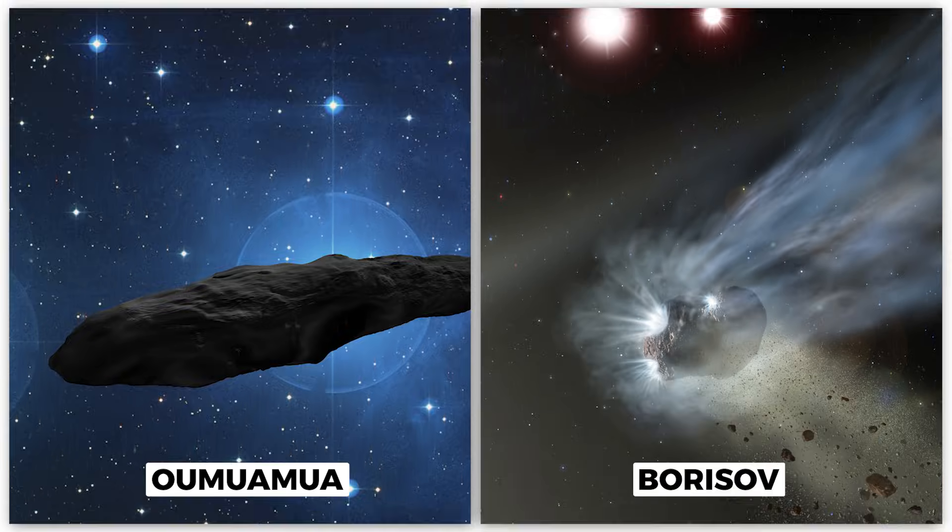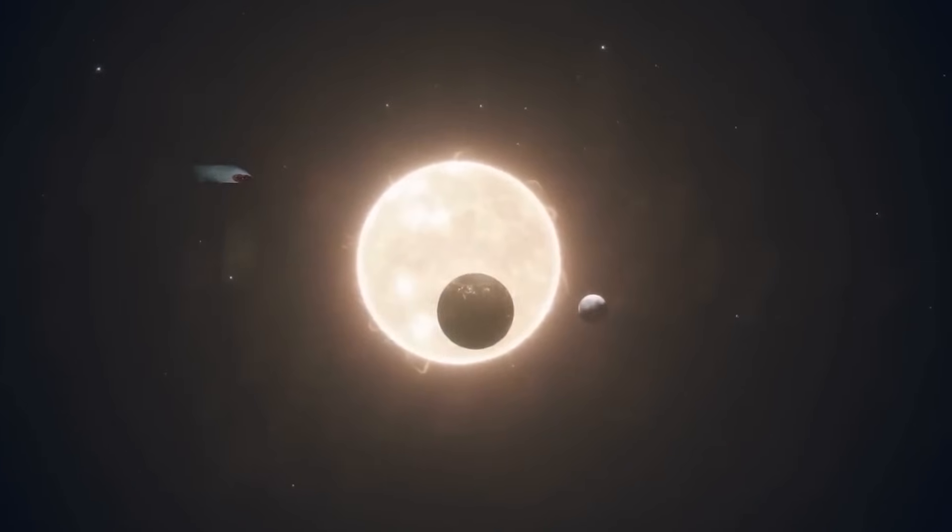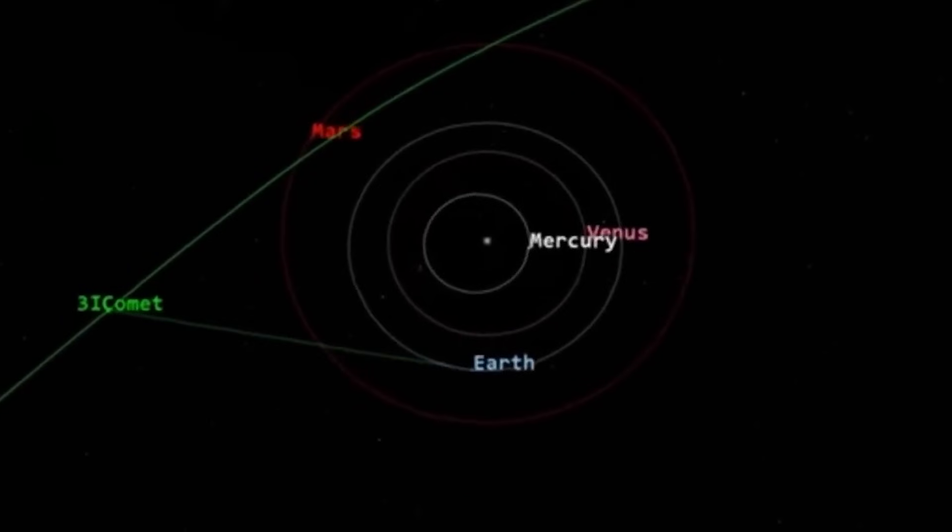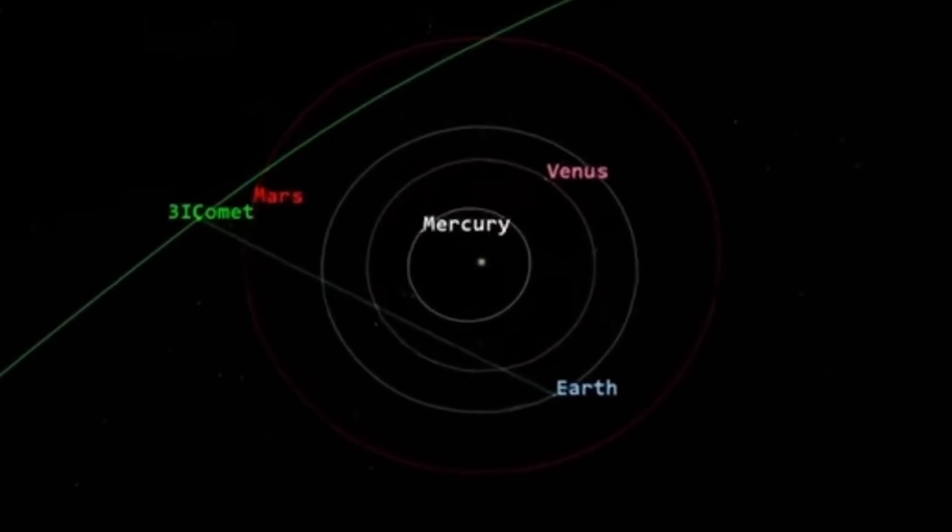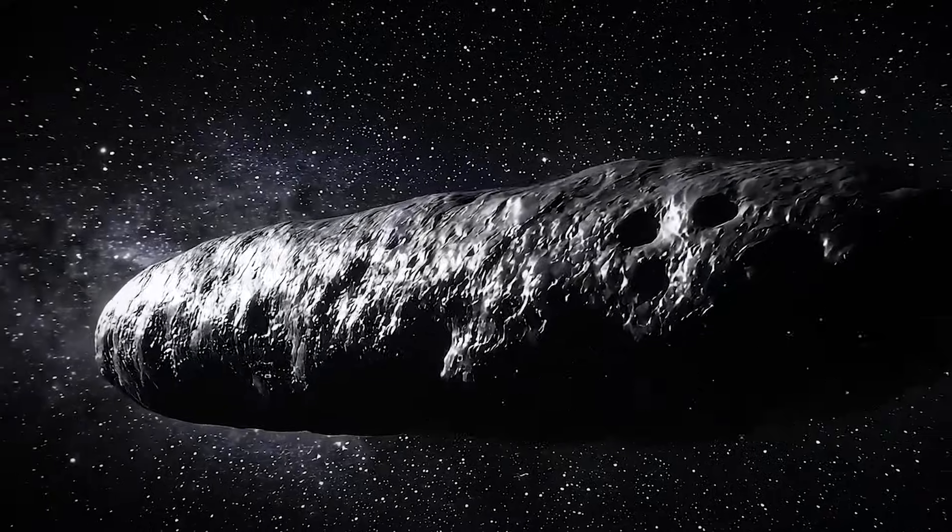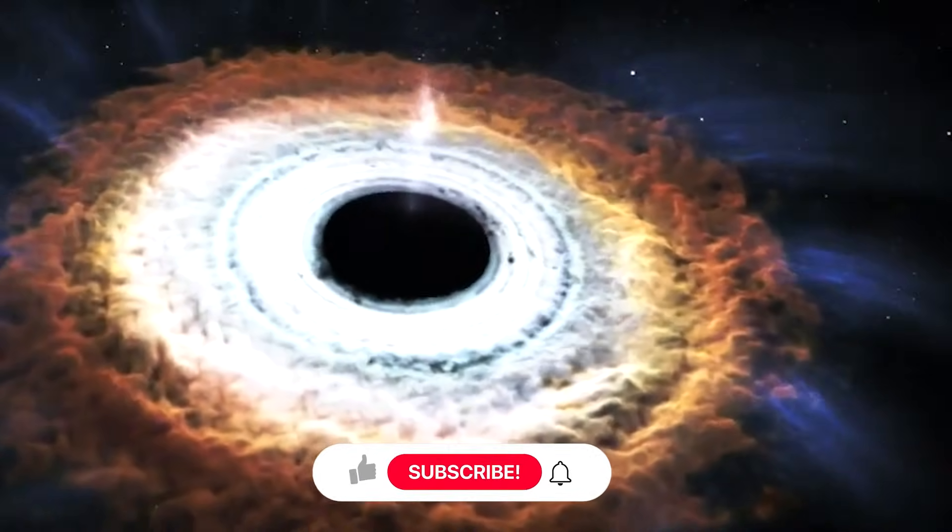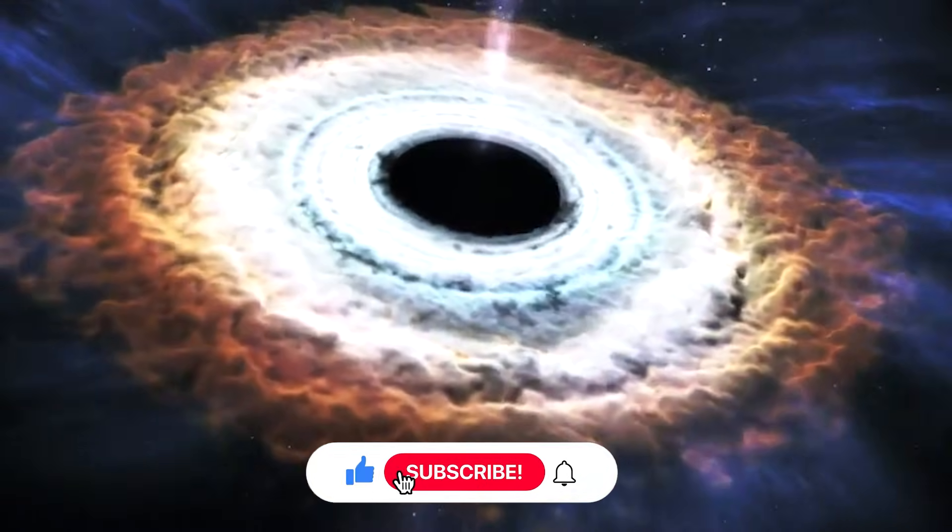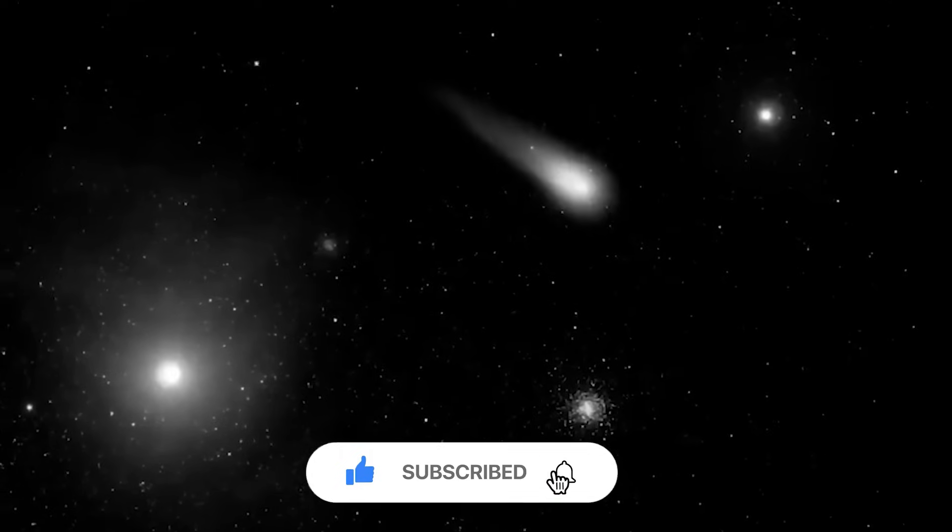Oumuamua? Nothing. Borisov? Radio silence. But 3I Atlas is different. And what's happening right now as this ancient wanderer passes through our solar system is revealing secrets about how matter survives the journey between stars, and possibly how life itself could travel across the galaxy. Subscribe to Space Aquarius and let's begin.